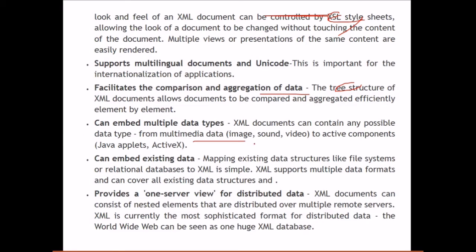XML components can contain any possible data type — from multimedia data such as images, sound, and video, to active components like Java Applets and ActiveX. XML can also embed existing data, as mapping existing data structures like file systems and relational databases to XML is straightforward. XML provides a single-server view of distributed data; documents can consist of nested elements distributed over multiple remote servers. The worldwide web can be seen as one huge XML database.